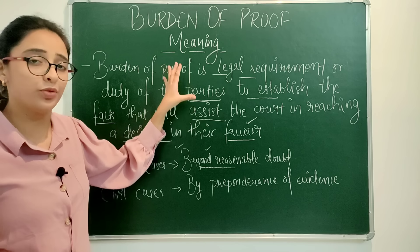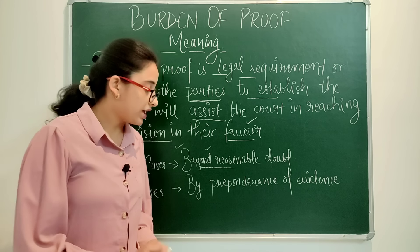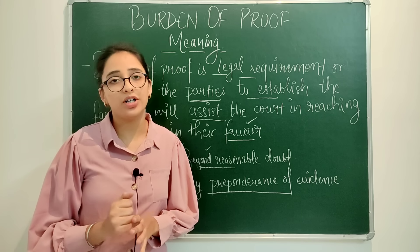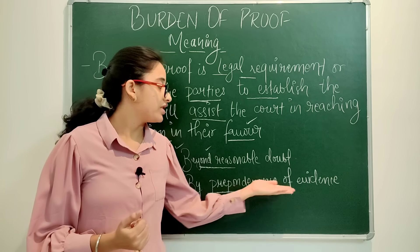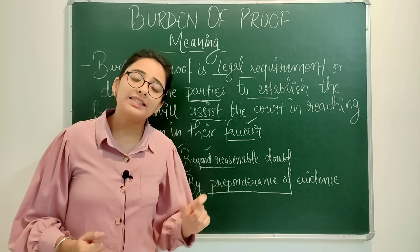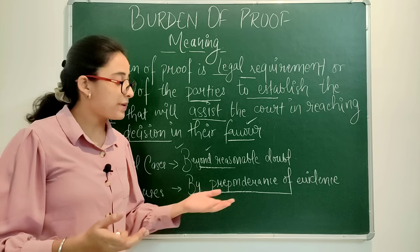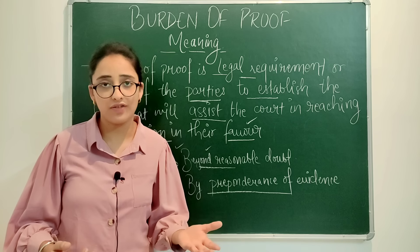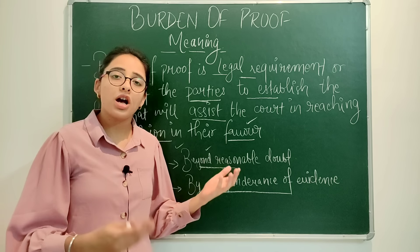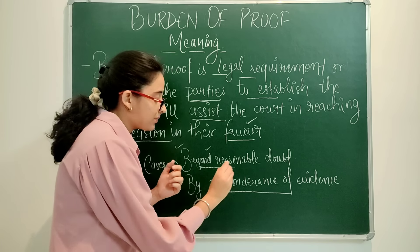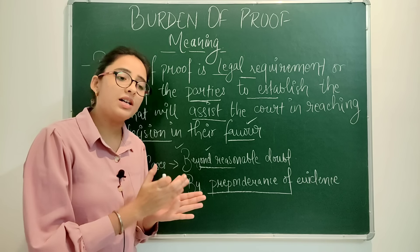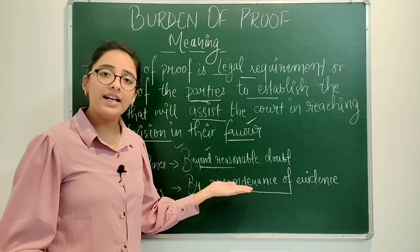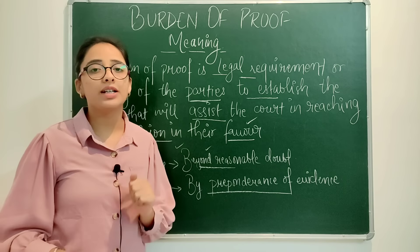In civil cases, the burden of proof is very low. By preponderance of evidence, we have to prove the burden of proof. It means that more than 50% of the evidence must favor our case — the fact against the other party must be more true than false. So the burden of proof is lesser as compared to criminal cases.